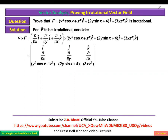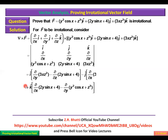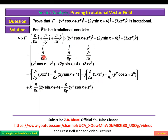Expanding this 3×3 determinant by the first row: i[(∂/∂y)(3xz²) − (∂/∂z)(2y sin x + 4)] − j[(∂/∂x)(3xz²) − (∂/∂z)(y² cos x + z³)] + k[(∂/∂x)(2y sin x + 4) − (∂/∂y)(y² cos x + z³)].